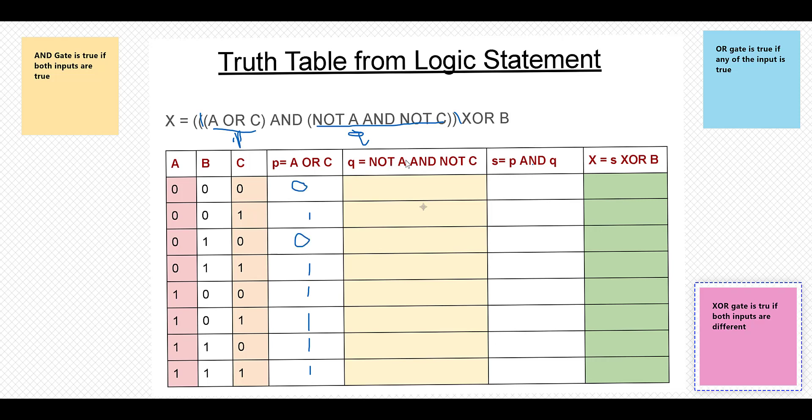Next is NOT A AND NOT C. So basically it is opposite of AND gate. If AND gate is true if both are true, then this q part will be true if both are not true.